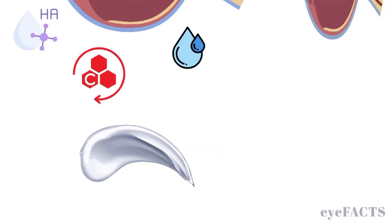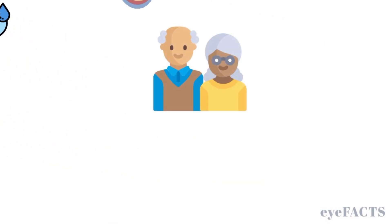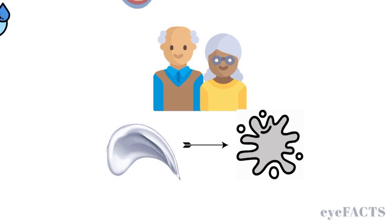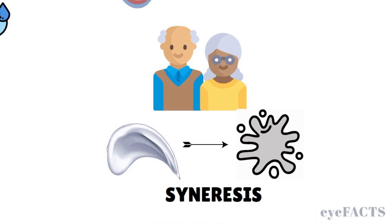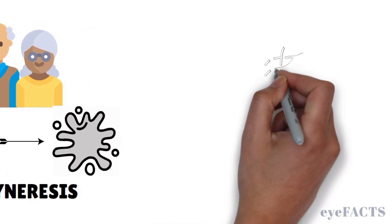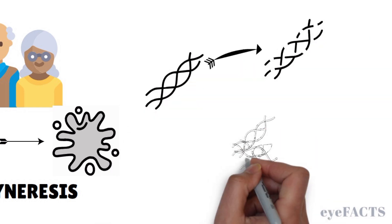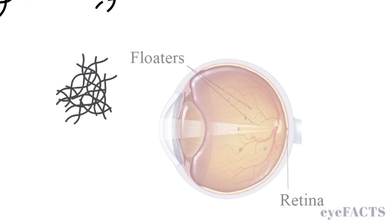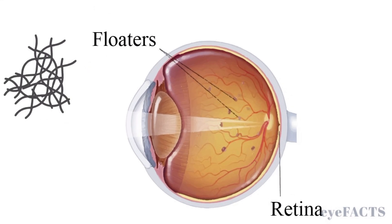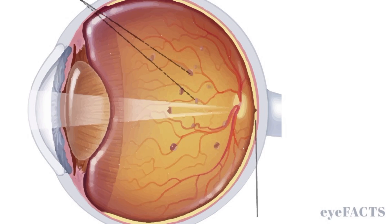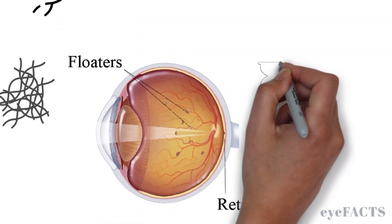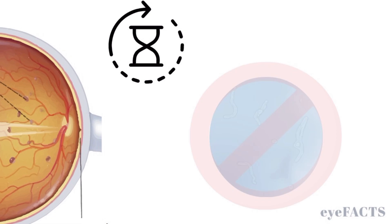As we get older, the vitreous starts to become more liquid-like. This process is called synneresis, a natural aging process that leads to the breakdown of collagen fibers inside the vitreous, making them clump together. These clumps float around and cast shadows on your retina, and it is the shadows that we see as floaters. Because it's a natural aging process, there's really no way to stop the development of floaters, but there are treatments that can be done if floaters are interfering with your life.